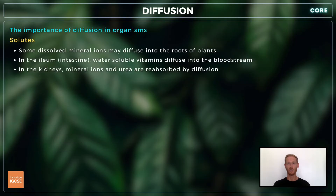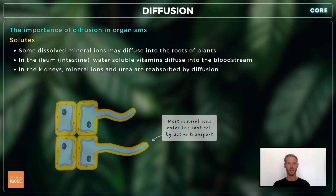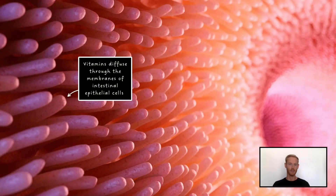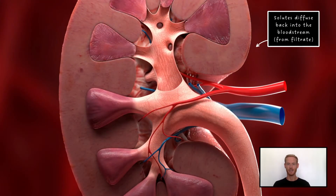In terms of solutes, it's believed that some dissolved mineral ions like nitrates and magnesium are able to diffuse across the cell membranes of root hair cells in plants. In the ileum of the small intestine, diffusion allows water-soluble vitamins like vitamin B to be taken up by the bloodstream. Finally, in the kidneys, some solutes like mineral ions and urea are reabsorbed by diffusion.